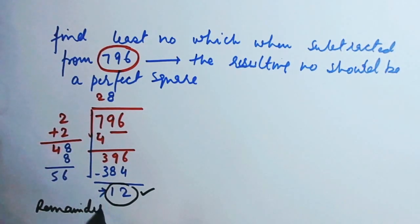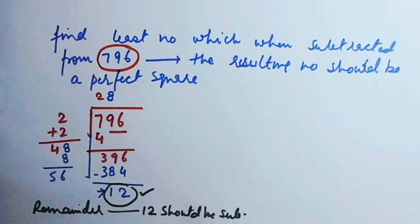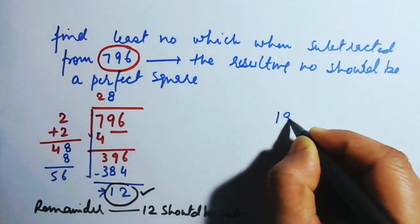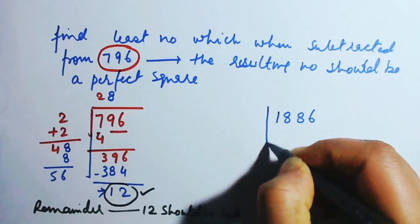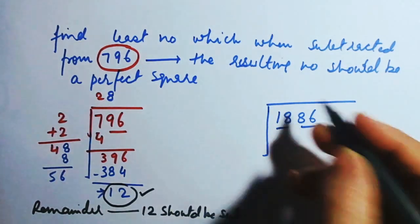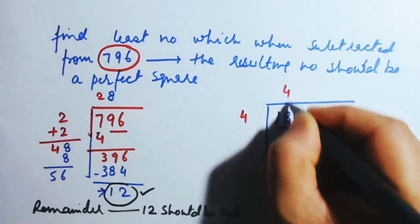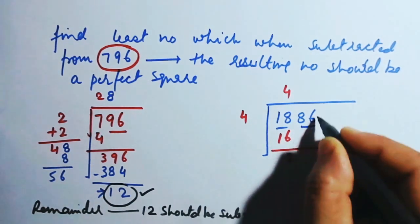So the remainder should be subtracted. Similarly, let us take one more number: 1886. They are asking the same — 1886 is not a perfect square. So what number should be subtracted to make it a perfect square? Let us find the square root. How much? Four times four is 16 — I will take four only, I cannot take five. Four times 16, the remainder is 2. 86 will come down.